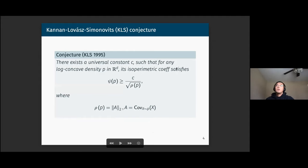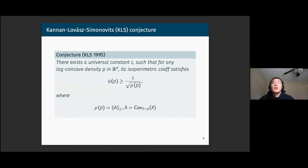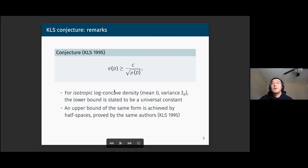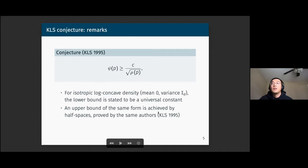KLS conjectured in 1995 that there exists a universal constant such that for all log-concave densities, the isoperimetric coefficient is lower bounded by that constant times some normalization factor. The normalization factor is the square root of the spectral norm of A, where A is the covariance matrix of the density. If we restrict ourselves to isotropic log-concave density — where the mean is zero and variance is normalized to identity — then the lower bound is just a universal constant. The upper bound is shown to be achieved by half-spaces in the 1995 KLS paper.